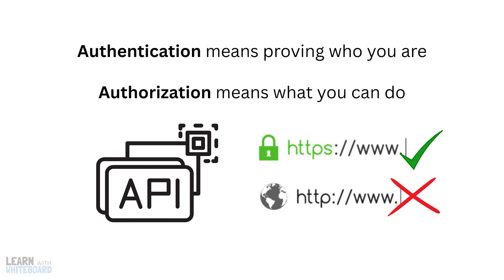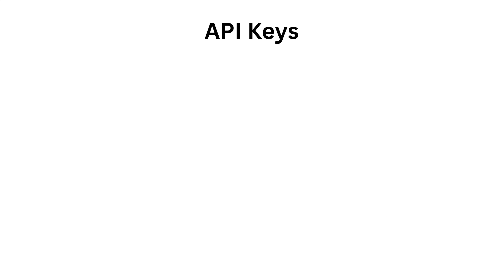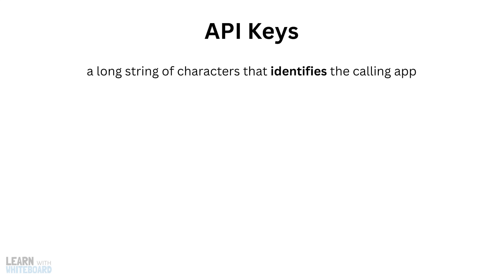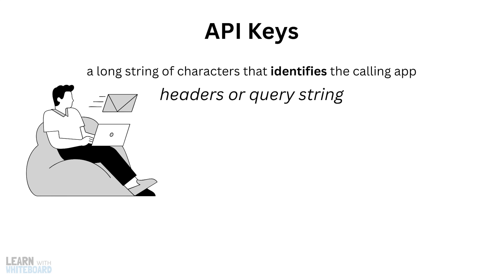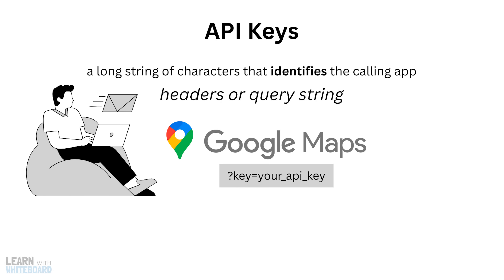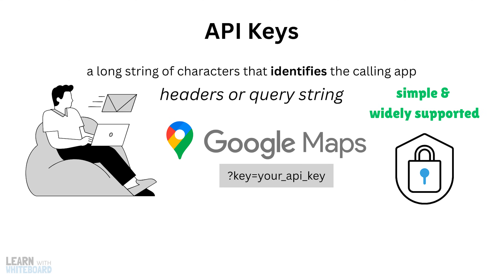Let's begin with the most common one: API keys. An API key is just a long string of characters that identifies the calling app. You send it with every request, usually in the headers or query string. For example, if you're using the Google Maps API, you'll often see something like this in the URL. It's simple and widely supported, but also weak in terms of security — if someone gets hold of your key, they can use your API.